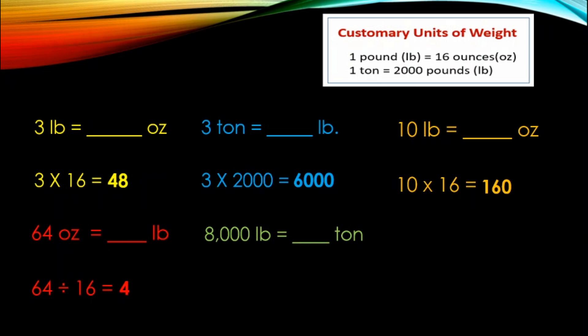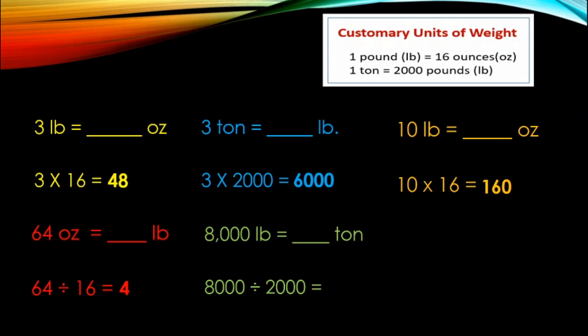Next problem: 8,000 pounds equals how many tons? Pounds to ton — right to left, smaller unit to larger unit, so you will do division. 8,000 divided by 2,000, and the answer is 4. 8,000 pounds equals 4 tons.